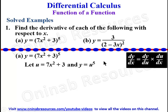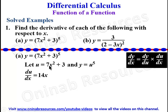Now y becomes u raised to the power of five, since 7x² + 3 is replaced by u. With these new functions, we differentiate u with respect to x, then differentiate y with respect to u. For du/dx, we multiply the power by the coefficient giving 14, and reduce the power of x by one, giving 14x. The derivative of a constant is zero, so du/dx = 14x.